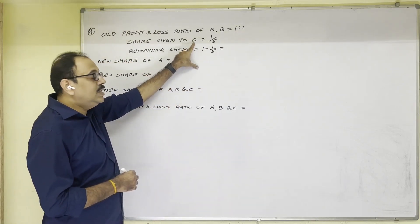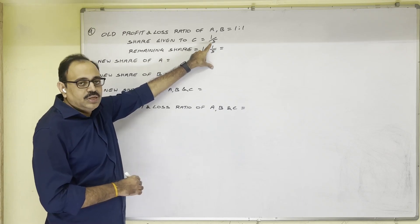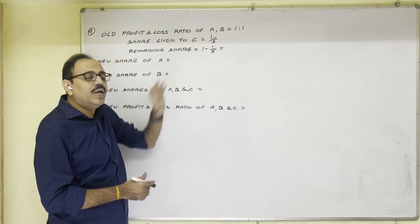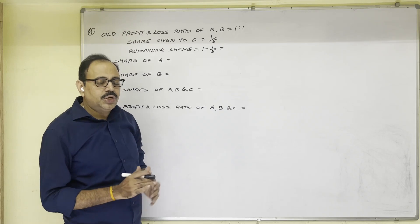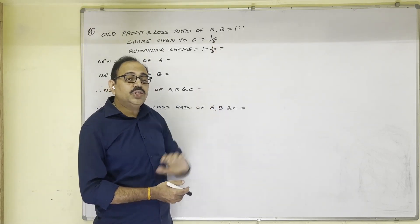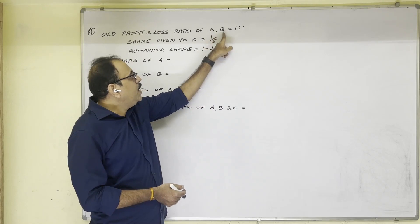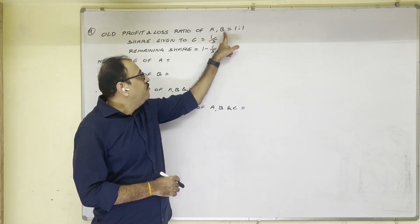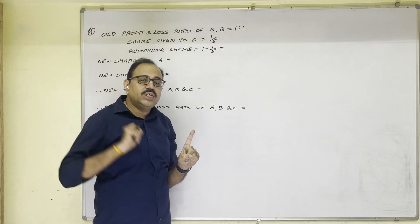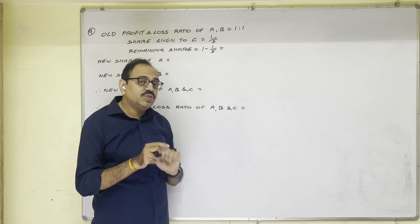And they have taken C as a new partner by giving him 1/5th share in the profits. So remaining share will be taken by A and B. That remaining share we should calculate. If it is a percentage total value is 100. But here fraction is given in case of fraction total value is always 1. So this one share before admission A and B are taking. When C is joined in this one share, 1/5th is given to C. So the remaining share only A and B takes in future. That remaining share first we should calculate.